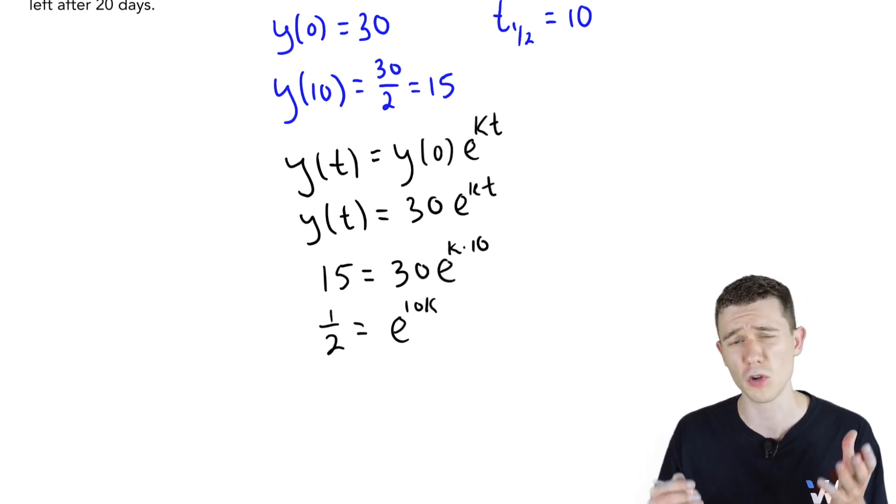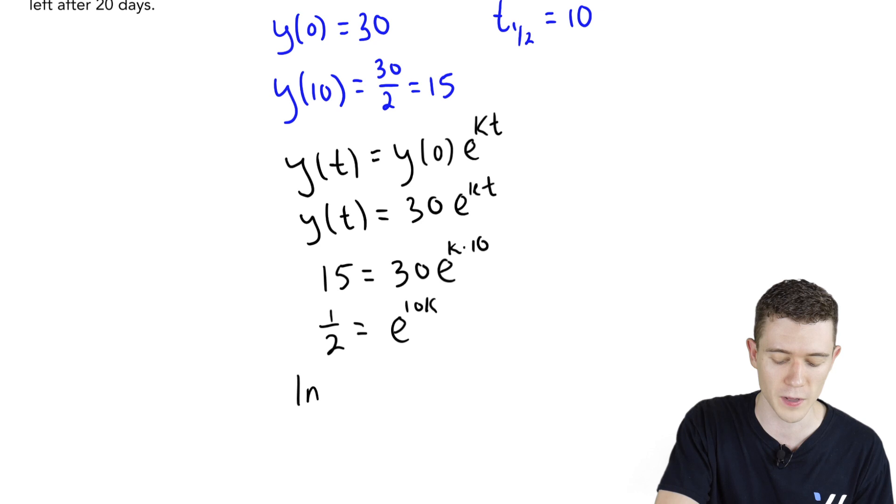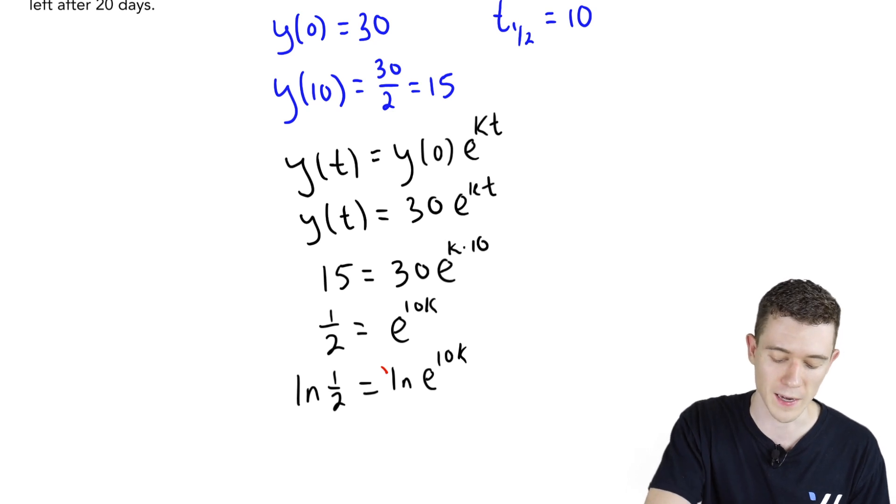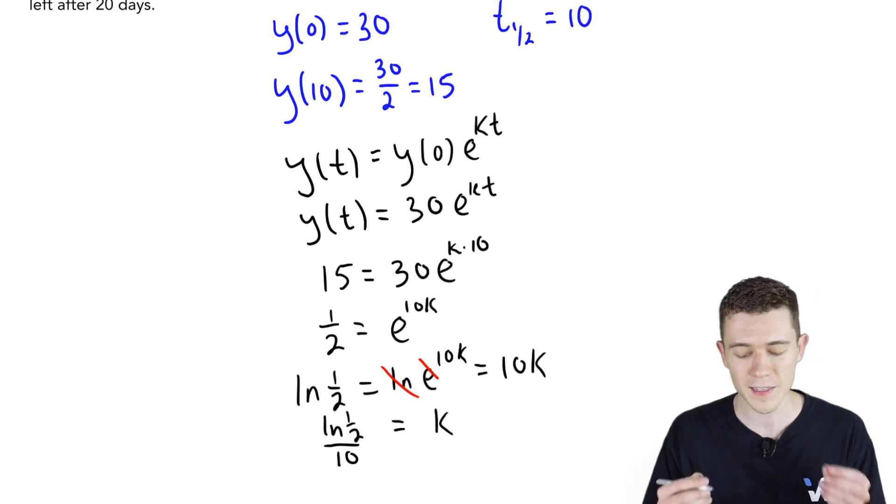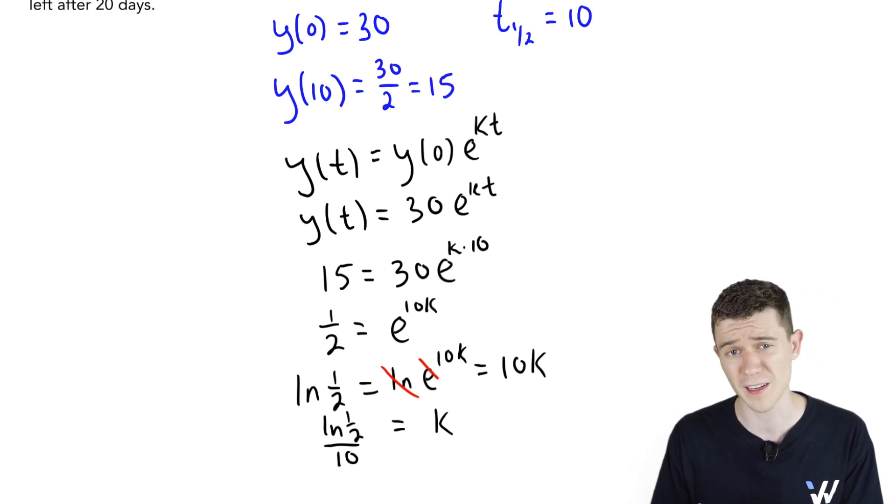Let's go ahead and take the natural logarithm of both sides to undo that e. Natural log of 1/2 is natural log of e^(10k). We do that because ln and e undo each other. We just get 10k. Finally, divide both sides by 10. Natural log of 1/2 over 10. This is k. This is our proportionality constant.